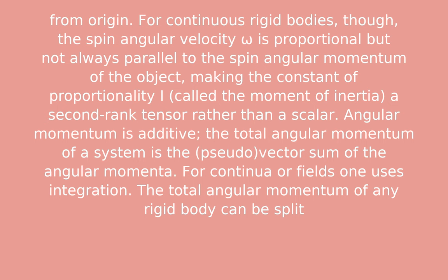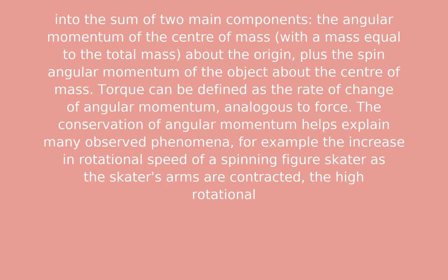Angular momentum is additive. The total angular momentum of a system is the vector sum of the angular momenta. For a continuum of fields, one uses integration. The total angular momentum of any rigid body can be split into the sum of two main components: the angular momentum of the center of mass about the origin, plus the spin angular momentum of the object about the center of mass.